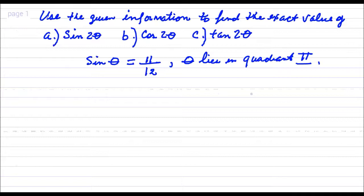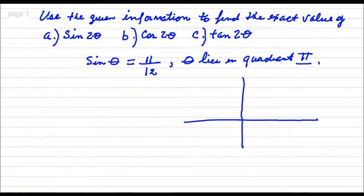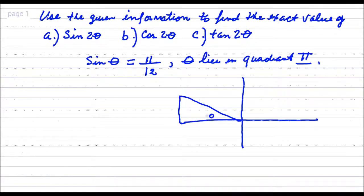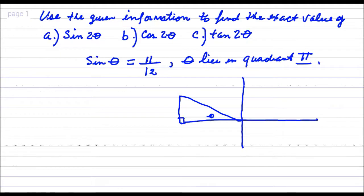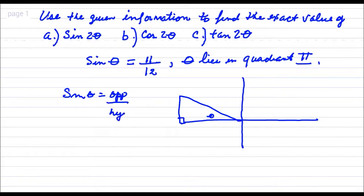So we are going to first go ahead and make a right triangle in quadrant 2. Here is the angle. It is a right triangle. So here sine is the opposite over the hypotenuse. And the opposite of this angle would be 11. The hypotenuse is 12. And you are going to need to find this third side here, this adjacent side, because we are going to need that.